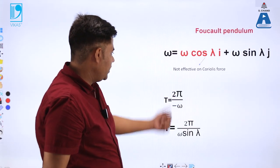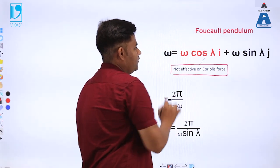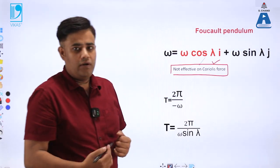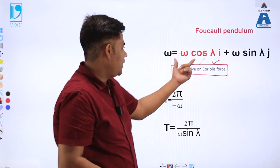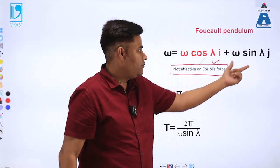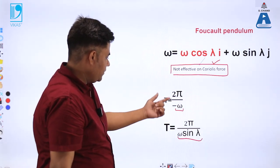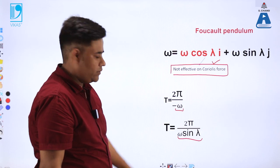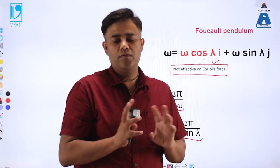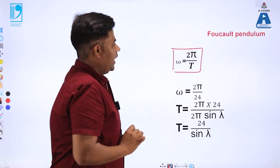The omega cos lambda i component is not effective here because it relates to the Coriolis force and can be neglected. So the only effective component is omega sin lambda j. In place of omega we substitute omega sin lambda, meaning T equals 2π divided by omega sin lambda.